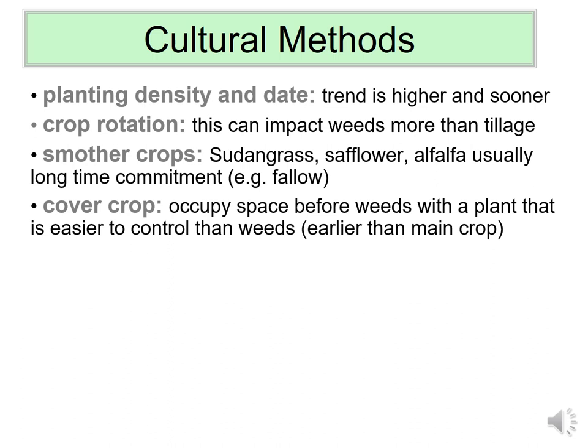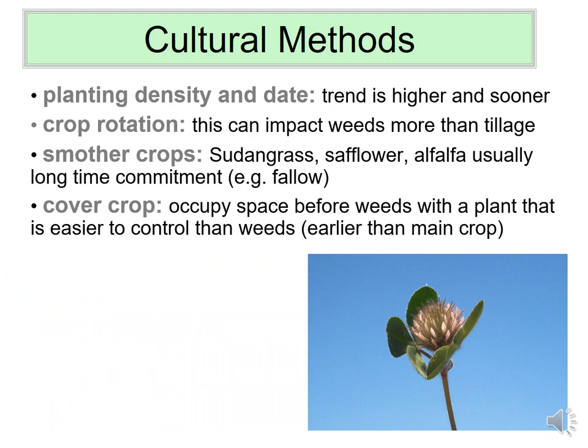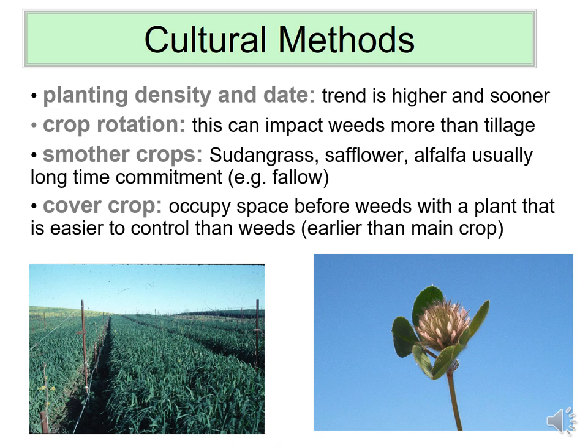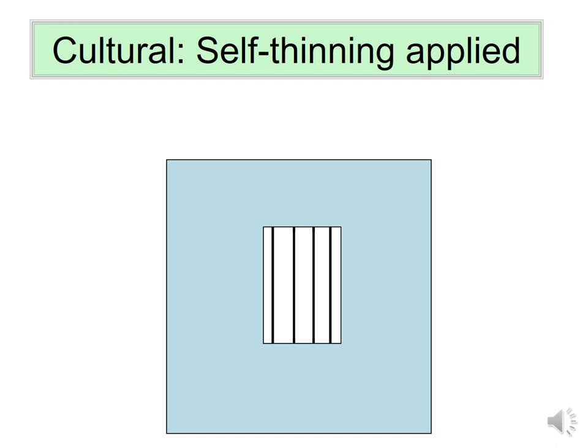Cover crops for weed control means planting a crop that is easier to get rid of than the weeds that would otherwise grow there. Cover crops can also add soil nutrients, organic matter, and other benefits beyond weed control. One example shown is a clover cover crop, and another is a grass cover crop in a vineyard — an oat mixed with a legume vetch.